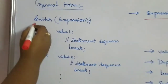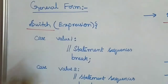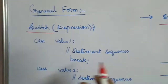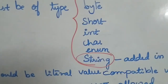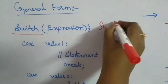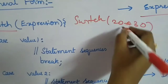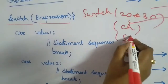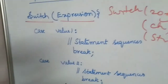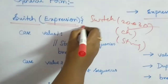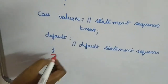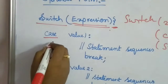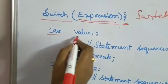The switch syntax is written in lowercase. It takes an expression, which can be any of the valid data types — byte, short, int, char, enum, or string from Java SE 7. You can also use arithmetic expressions like 20 times 30. Between the opening and closing braces, you write all your cases.